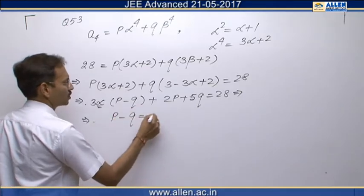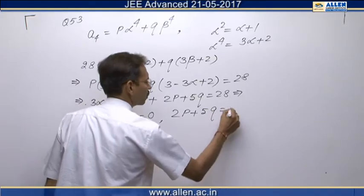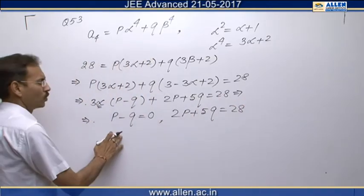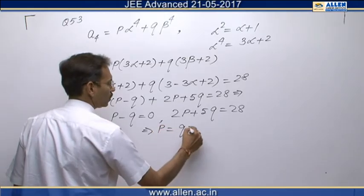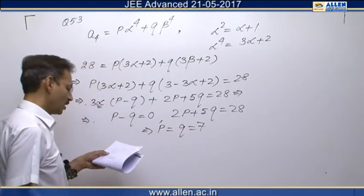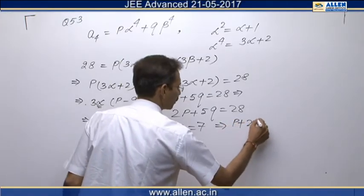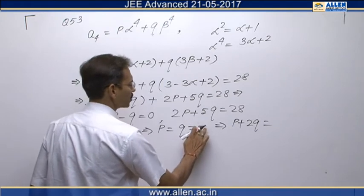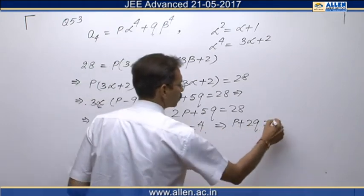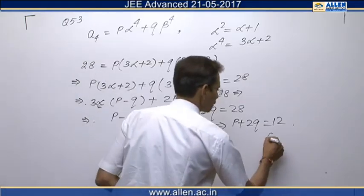P minus Q is 0 and 2P plus 2Q equals to 7... and they are asking us P plus 2Q. So P plus 2Q equals to, no this is not 7, this is 4. So P plus 2Q is 12. So the correct choice will be C, answer is C.